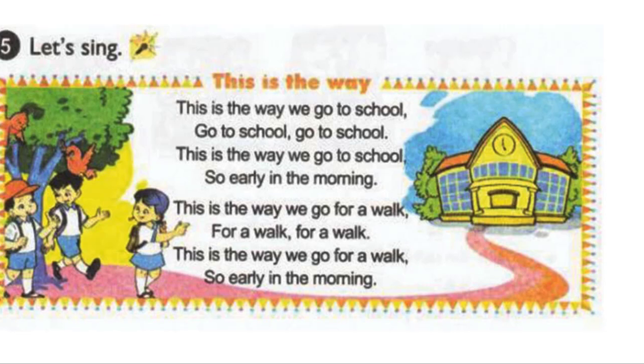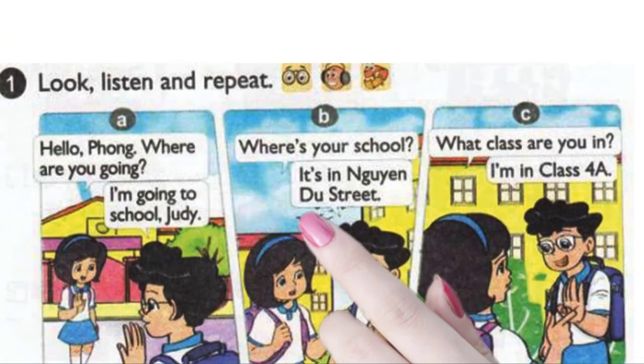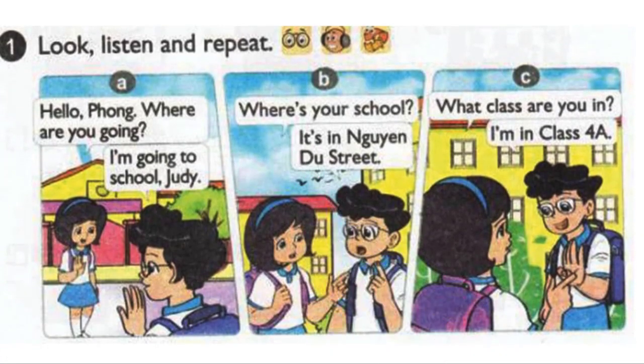Page 42. Lesson 2. Activity 1. Look, listen and repeat. A. Hello, Fong. Where are you going? I'm going to school, Judy.